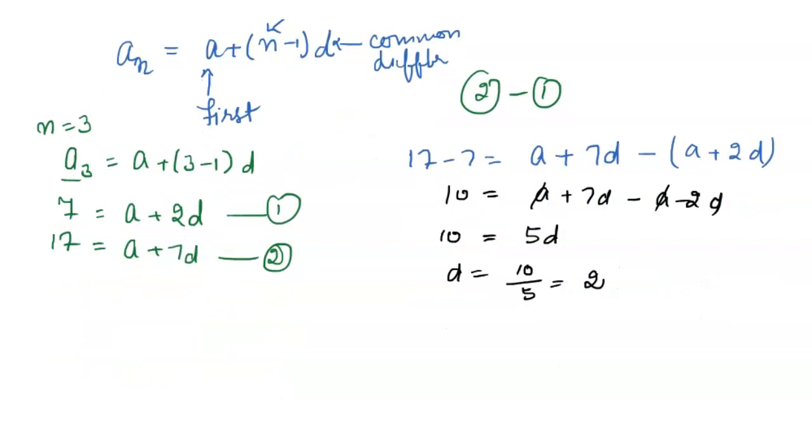Put the value of D in the first equation to get the value of A. Here D is 2, so 7 minus 2 times 2 equals A. A equals 7 minus 4, which is 3. So the value of A is 3 and the value of D is 2.